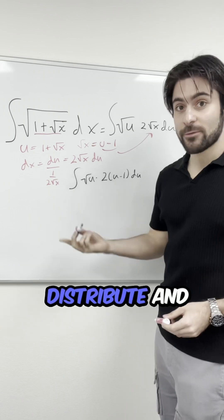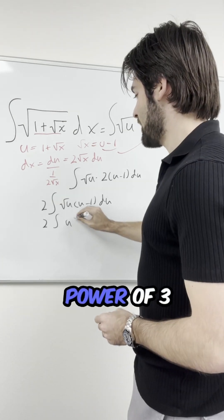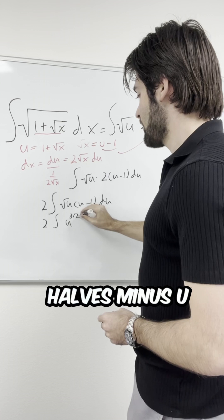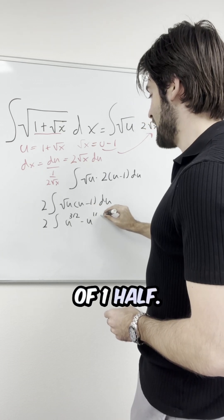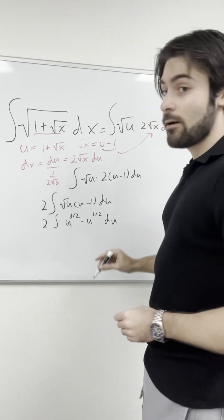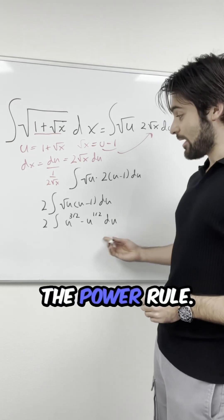Now if I distribute and rearrange the terms, that will give me u to the power of 3 halves minus u to the power of 1 half. From here, I can simply use the power rule.